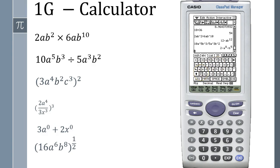Let's try the third one down here. Bracket 3, a to the power of 4, c squared, c to the power of 3, close my bracket, that's all to the power of 2. Okay, so it's squared 3 there, so 9a to the power of 8, b to the power of 4, c to the power of 6.